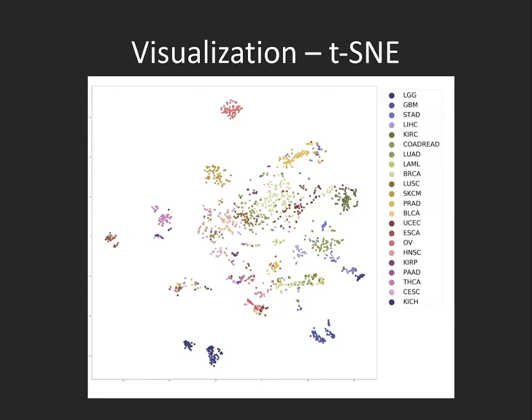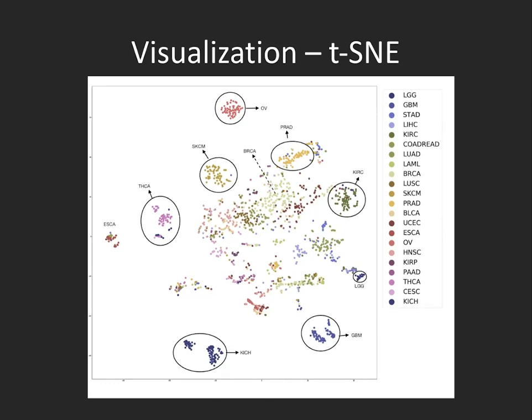Here are some results. This is a visualization of the multimodal model using a t-SNE plot, where we looked at the similarity between patients across different tissue types. We can see, for example, that ovarian cancer is very different from the other cancer sites, and that brain tumors and kidney chromophobe cancers are also quite distinct.